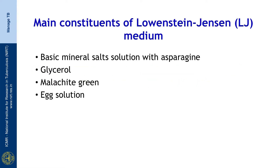The main constituents of the LJ medium, that is the Lowenstein-Jensen medium, that is generally used are: the basic mineral salt solution with asparagine; glycerol, which provides the carbon source; malachite green, which provides a green background for identification of colony morphology and to prevent the growth of gram-positive contaminants; and egg solution, which serves as the solidifying agent as well as for providing enrichment for the organism to grow.